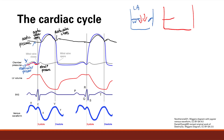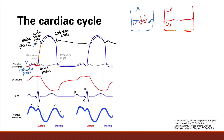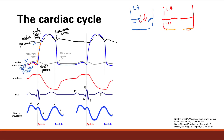Now the left ventricular pressure exceeds left atrial pressure and the mitral valves close. This is the point where diastole finishes. The next step is for the left ventricle to contract, which it does, and you can see the pressure goes up — increasing until the point where left ventricular pressure exceeds the aortic pressure.